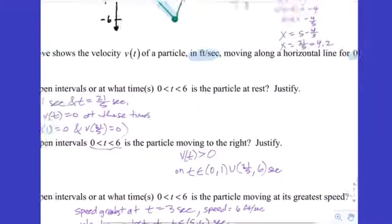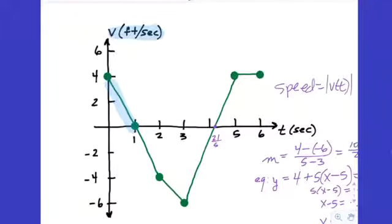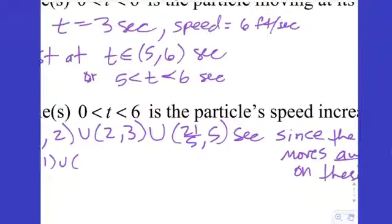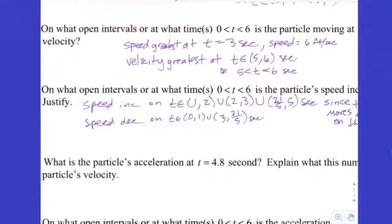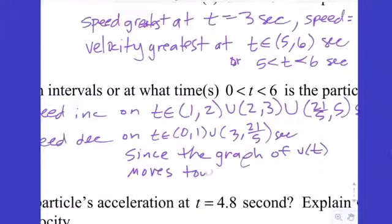Speed is decreasing whenever the graph is approaching the t-axis from either side — velocities approaching 0 means speeds also approaching 0. That happens from 0 to 1 and from 3 to 21/5. So: t in (0,1) union (3, 21/5) seconds. Justification: since the graph of v(t) moves towards the t-axis on these intervals. Make sure to say 'graph of v(t),' not just 'the graph' — otherwise no credit.